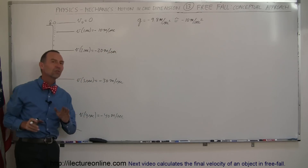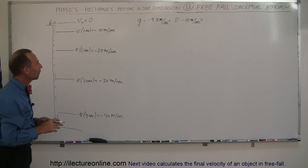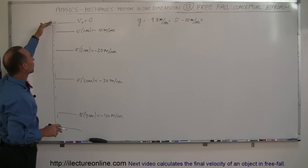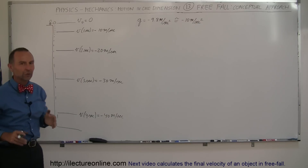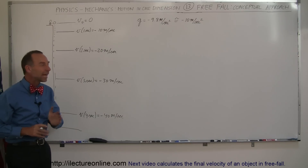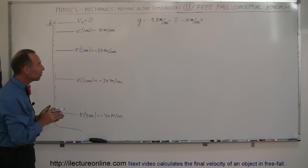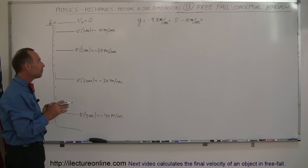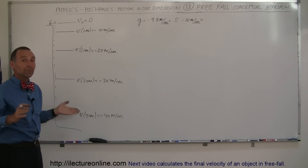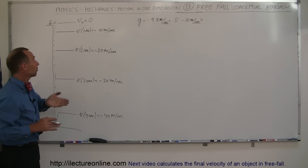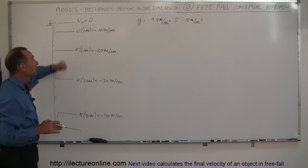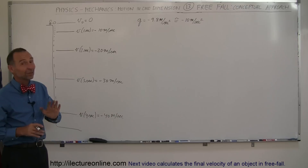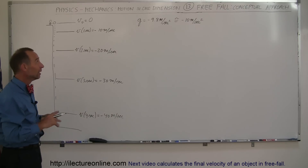Here's an interesting question: how far did the ball drop during the very first second? When I ask that question in my classrooms, a lot of people will say 10 meters because it went from 0 to 10 meters per second — they think it will have fallen 10 meters, but that's not the correct answer.